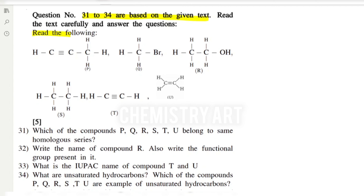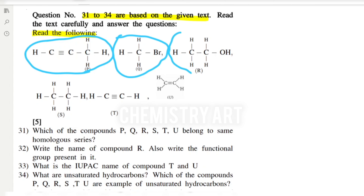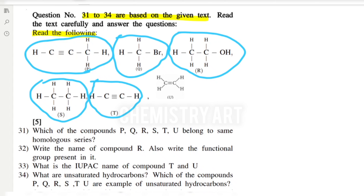Here, instead of text, some structural formulas of compounds are given. Let's first separate them. You can see this is P, then this one is Q, then R, this is S, this one is T, and this small one is U. You need to observe all the structural formulas of different molecules and answer questions 31, 32, 33, and 34. All these structural formulas are different by their structure and by their functional group.